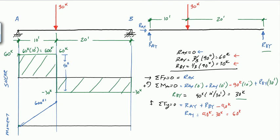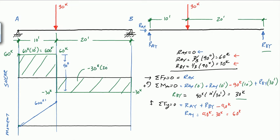On the other side, we have a shear of minus 30 kips for a distance of 20 feet, so the change in moment equals minus 30 kips times 20 feet, which is minus 600 kip feet. Starting at 600 and subtracting 600 brings us back to 0 — the moment drops to zero at the pin. The slope is constant at minus 30, so it's a straight line. This is the moment diagram for a point load.